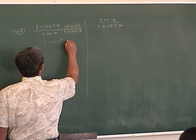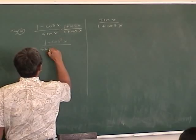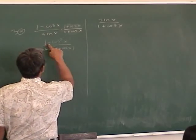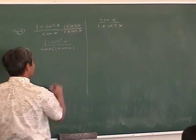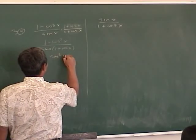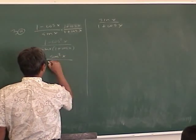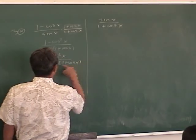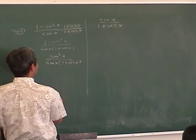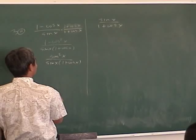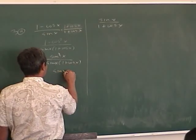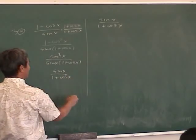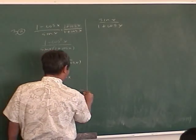If you multiply top and bottom by the conjugate, you get 1 minus cosine squared x on top. Then, 1 minus cosine squared is sine squared. You can cancel one of the sine factors, and you get sine x all over 1 plus cosine x. The left side is the same as the right side — quite easily done.